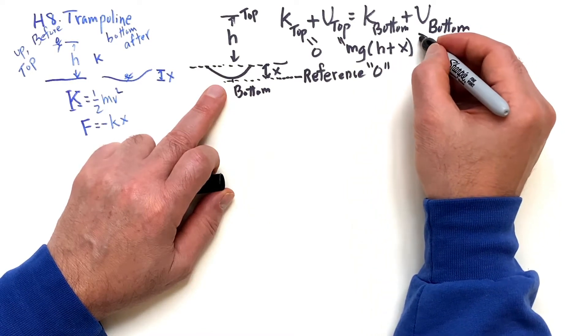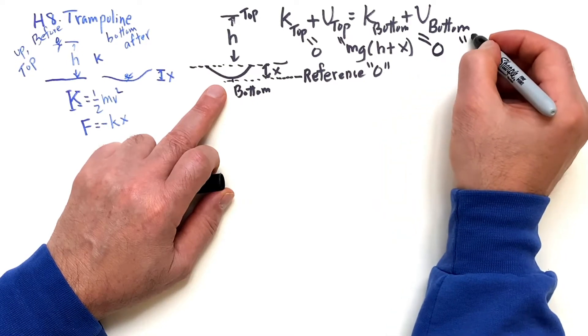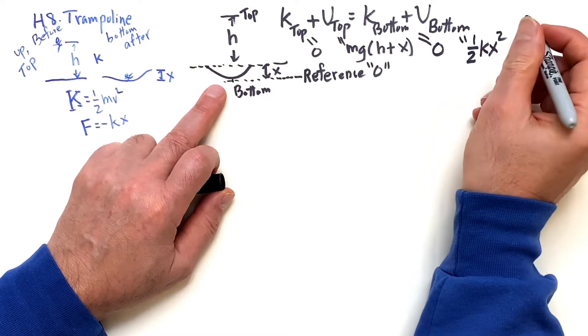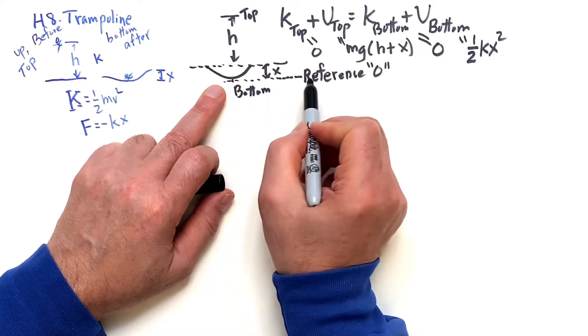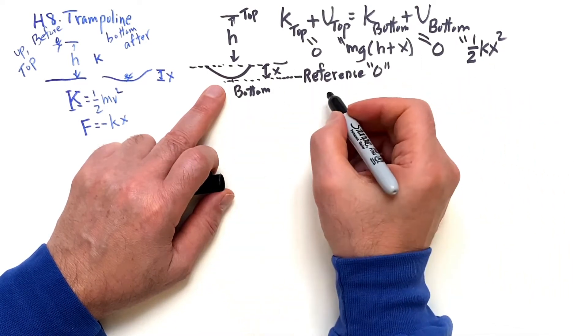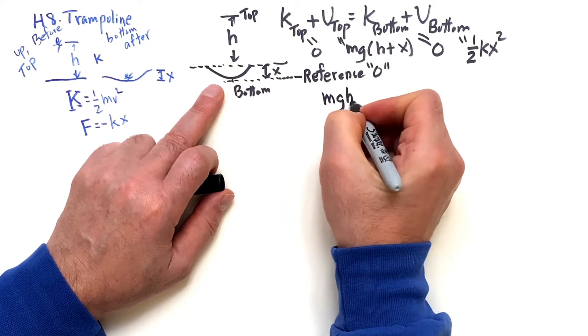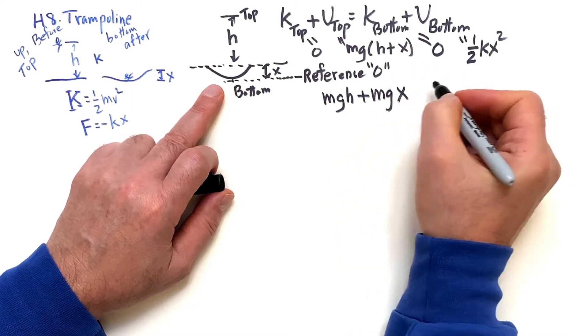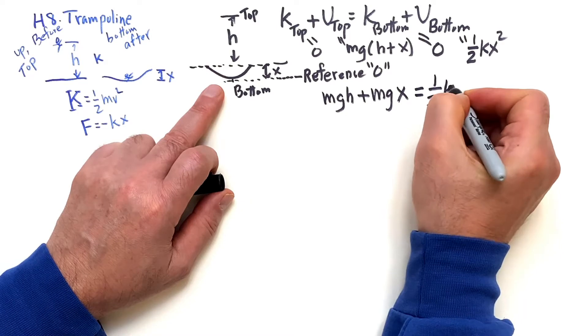The kinetic energy is going to be equal to zero. And you're going to have one half kx squared, the spring. There'll be no gravitational potential energy because you're at the reference point, the zero point. So this gets us mg h plus mg x equals one half kx squared.